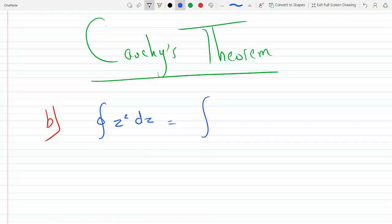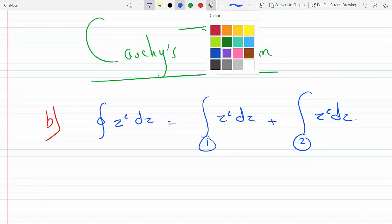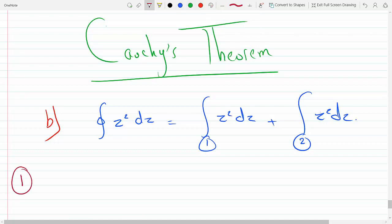For path 1, we're gonna use rectangular coordinates. On path 1, y is 0, dy is 0, there's no change in y because we're going vertically like this.